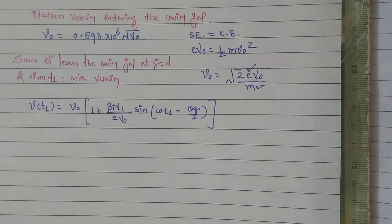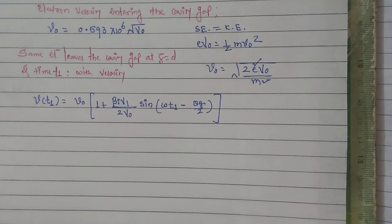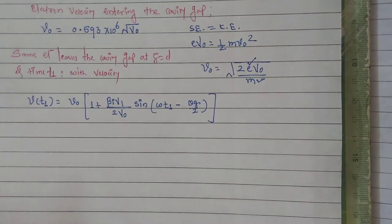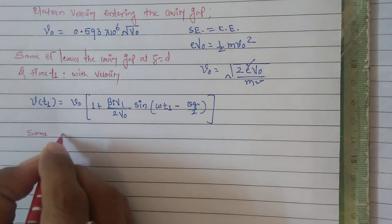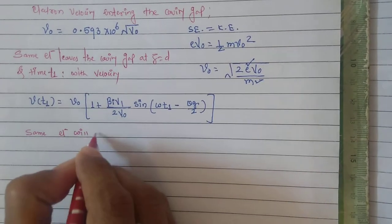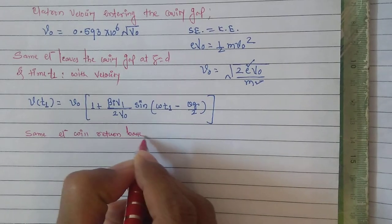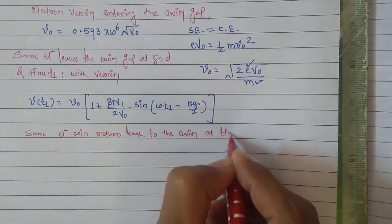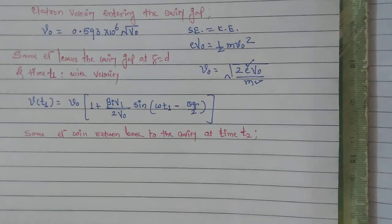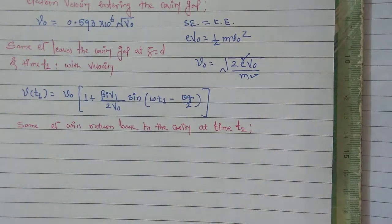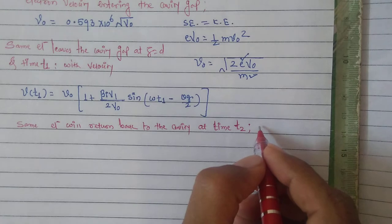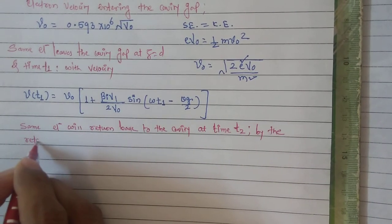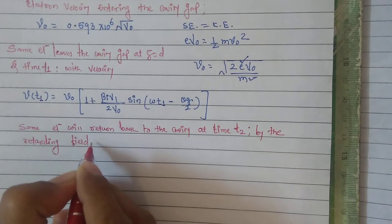Now, once electrons have come out of the cavity with this velocity, because of the retarding field present in the space between the repeller and the cavity, electrons will reflect back. The same electron will return back to the cavity at time t2, due to the retarding field.